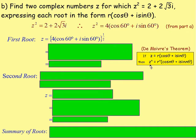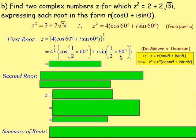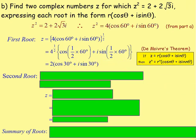When we have a complex number to a power, we take the modulus to that power and multiply the argument by the index. The modulus is 4, so we have 4 to the power of one half — the square root of 4. Because we want the power of one half, we multiply the argument by one half: cos(½×60) and i·sin(½×60). The square root of 4 is 2, giving us 2(cos30 + i·sin30). That is our first root.